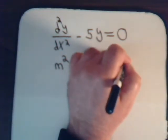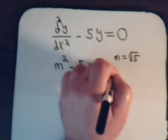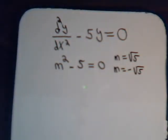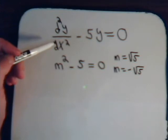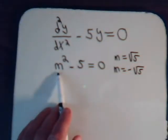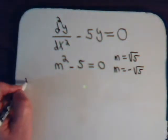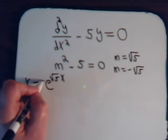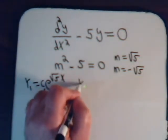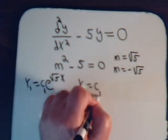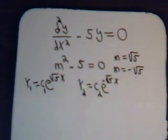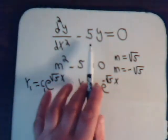Obviously m will equal plus the square root of 5 and minus the square root of 5. So for this second order differential equation, because we have a quadratic equation, we're going to have two solutions. The first one is e to the square root of 5x multiplied by some constant, and the second one is some constant times e to the minus square root of 5x. And that's the solution. We can plug these in and see that it comes out to zero.